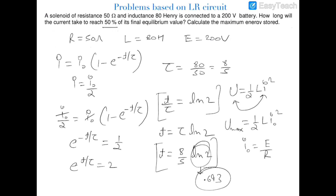In this question there is a coil of resistance 4 ohm connected across a 0.4 volt battery. The current in the coil is 63 milliampere one second after the battery is connected. We have to find out the inductance. The resistance is 4 ohm, the EMF is 0.4 volt, the current at any instant is 63×10⁻³ ampere, and the time is 1 second.